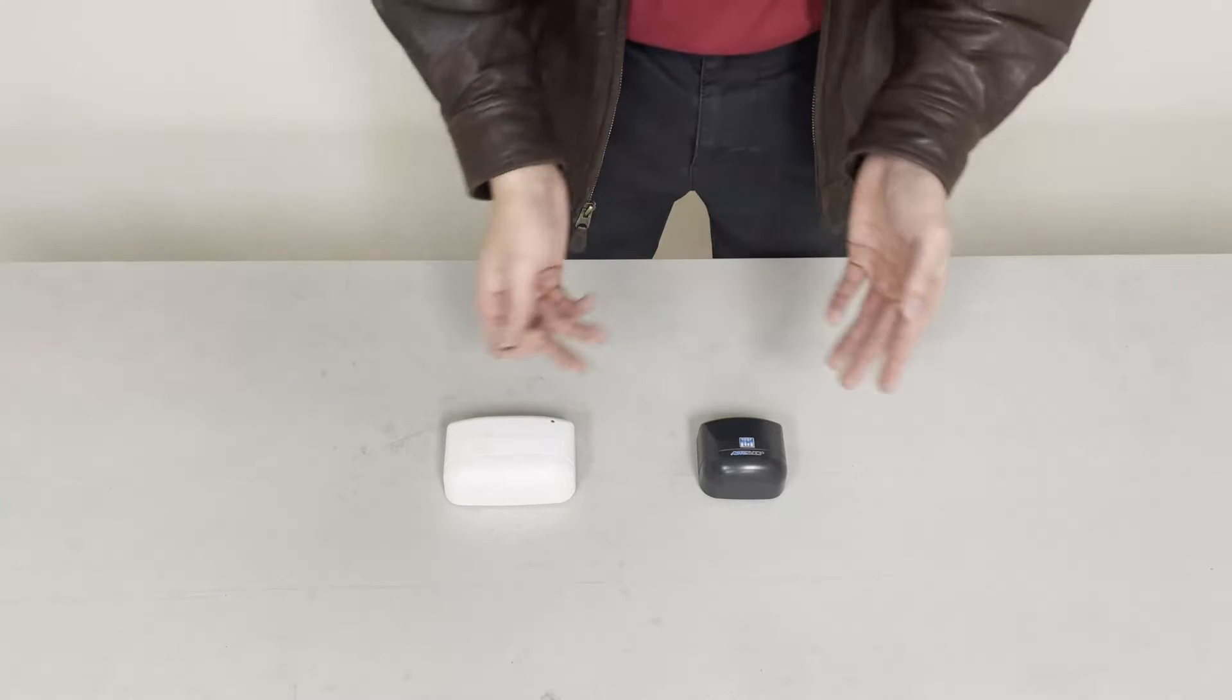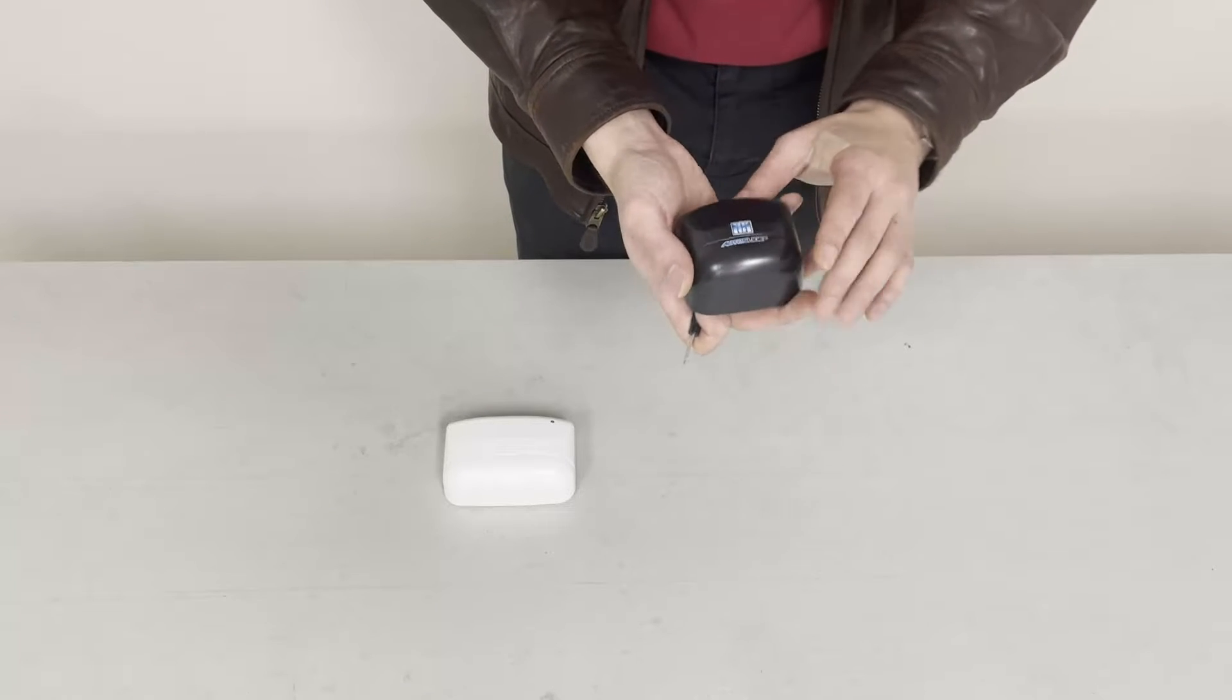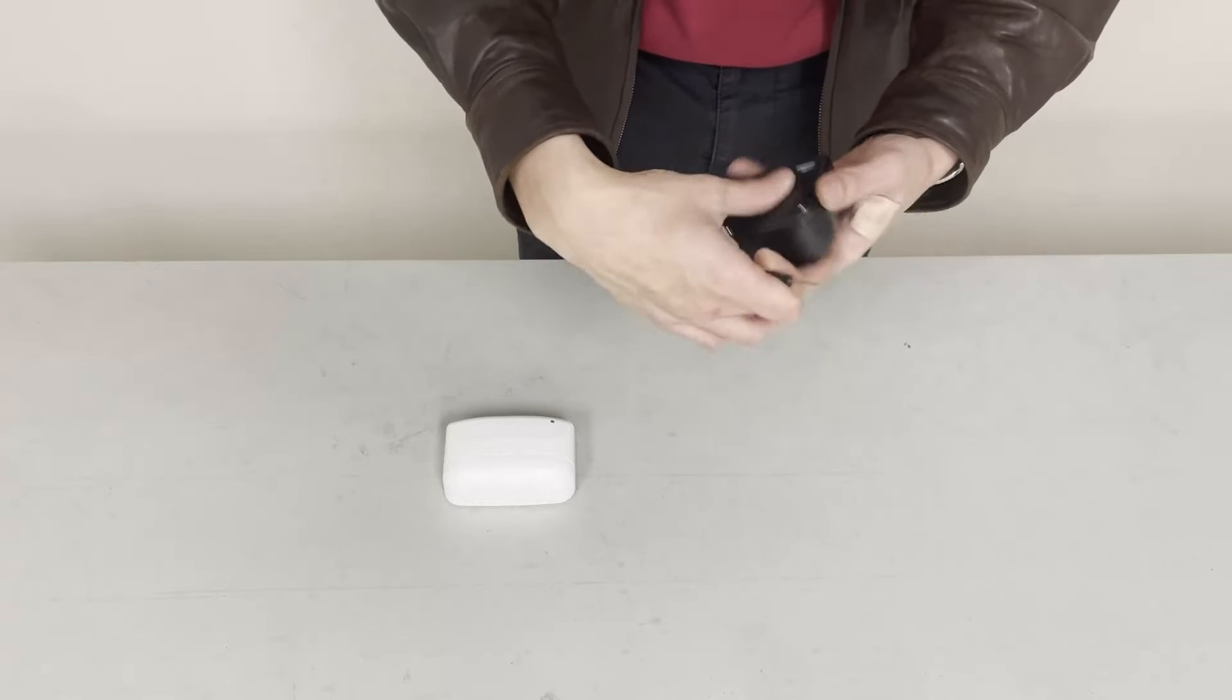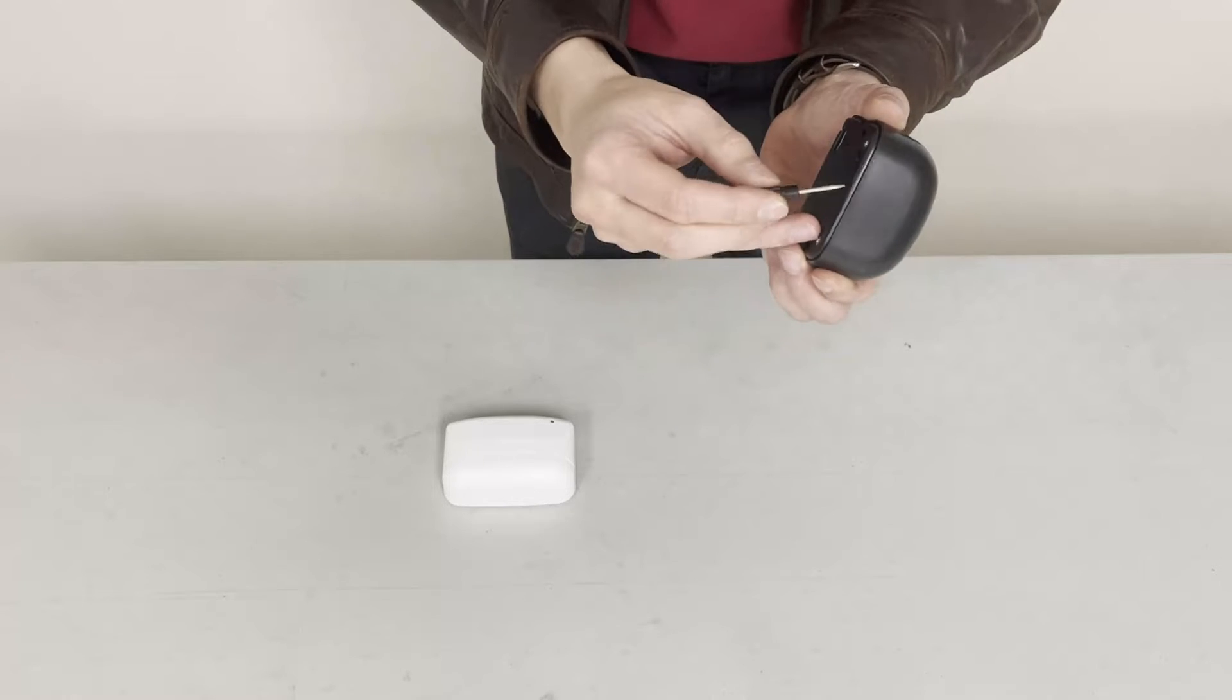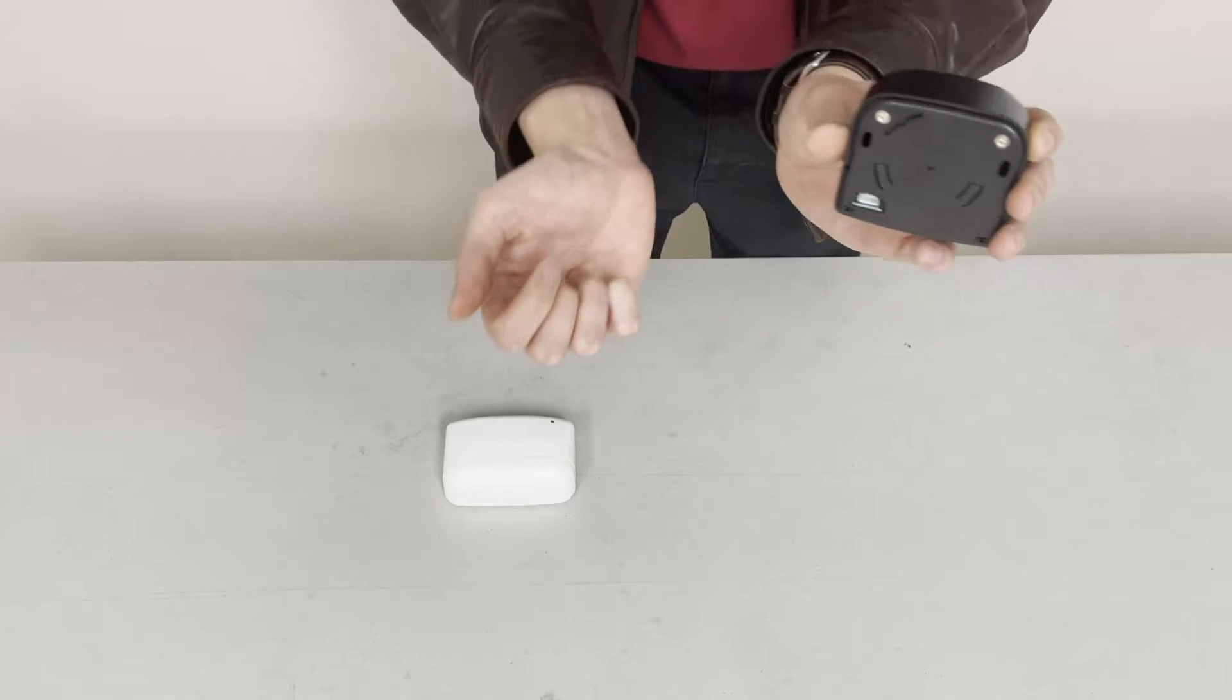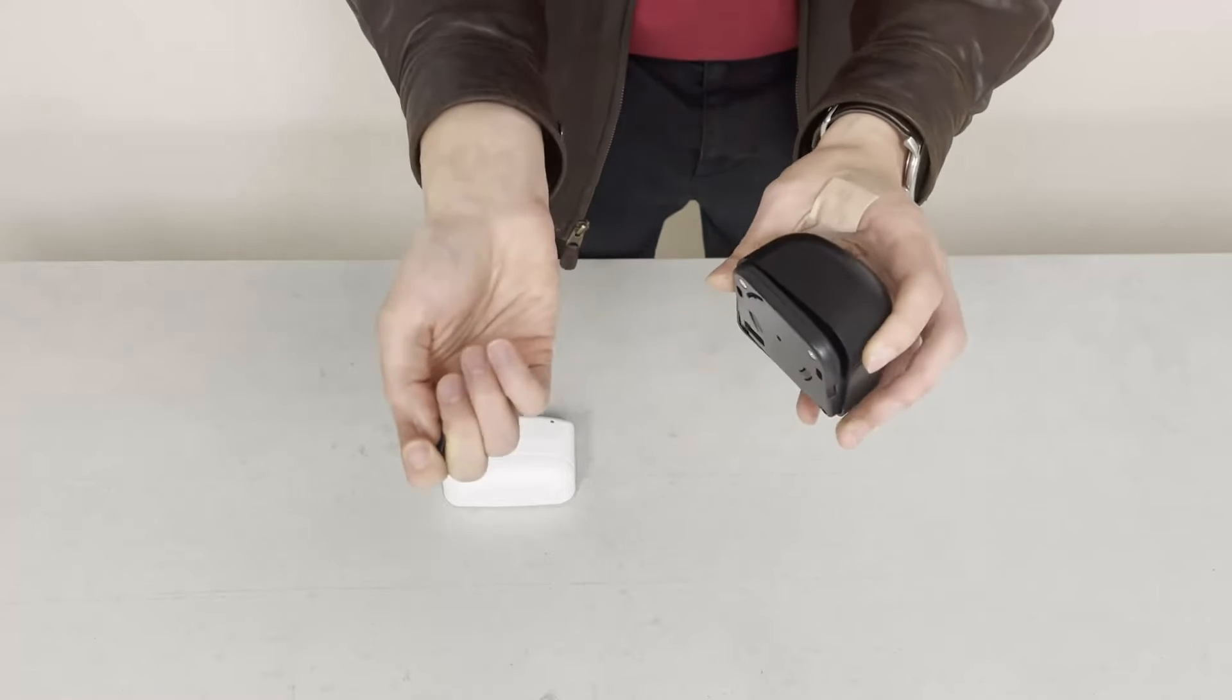So I'll start by going ahead and opening up the cover here and showing you the different components. We'll start with the hardwired version. With the hardwired microwave, the easiest way to open up this cover is to take a little screwdriver, the one that comes with the Autoslide kit, stick this screwdriver into the seam on the back side just like that, and then just pry it right out.